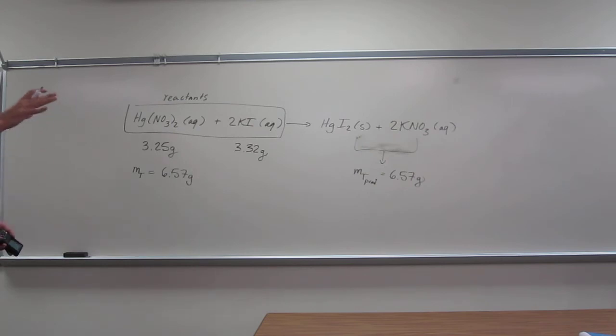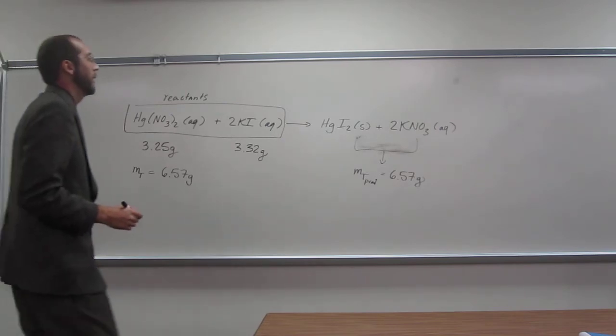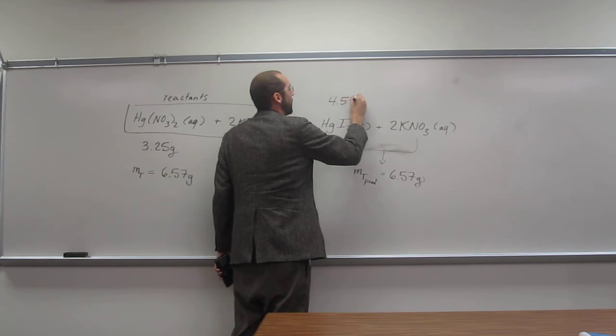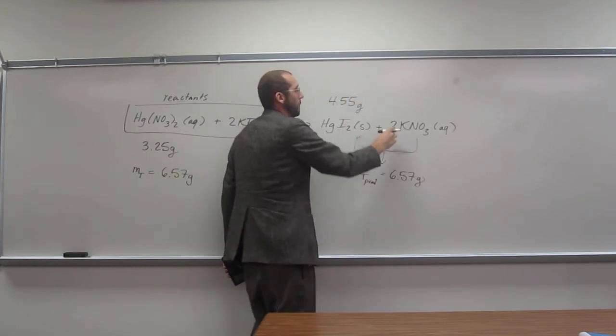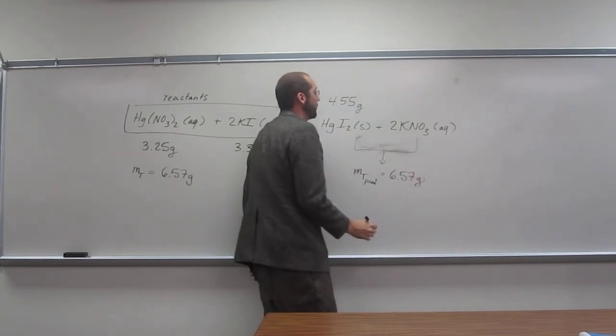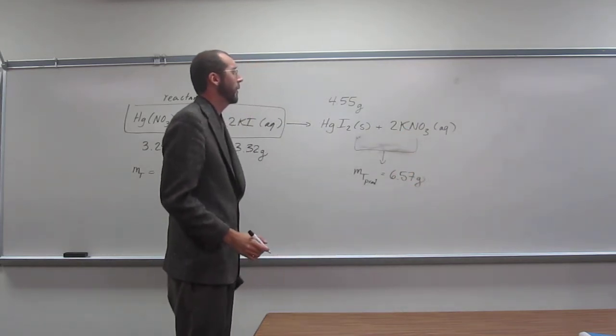And then the last problem says if there was 4.55 grams of mercury-2 iodide formed, what would the mass of potassium nitrate be? So how would we go about figuring that out?